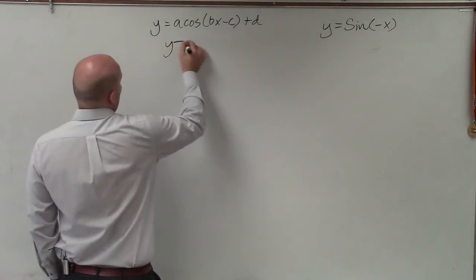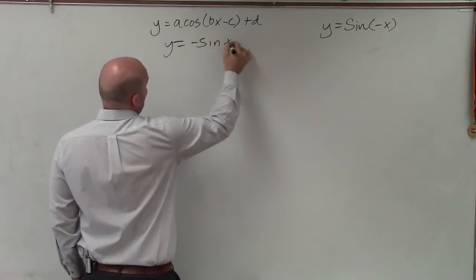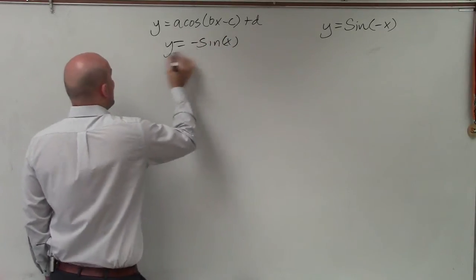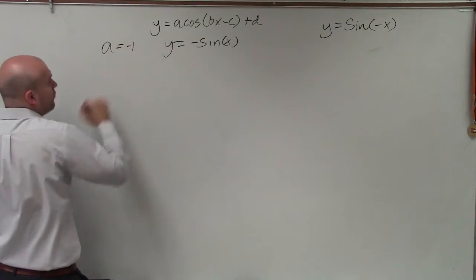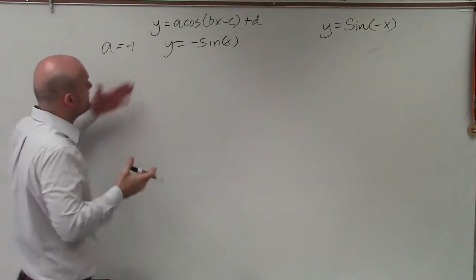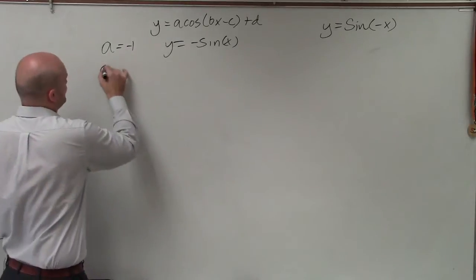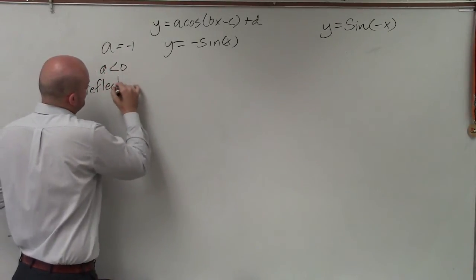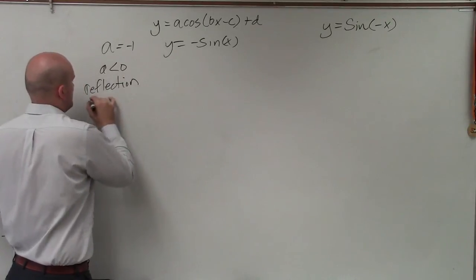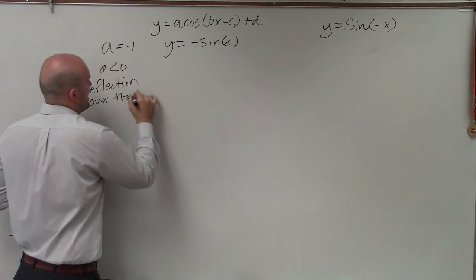So when we previously looked at y equals negative sine of x, what we saw was that a was negative 1. And so whenever we have a is less than 0, that means we're going to have a reflection over the x-axis.